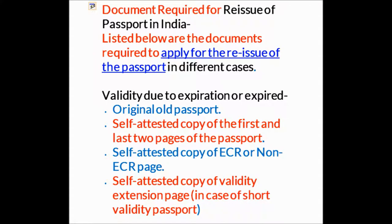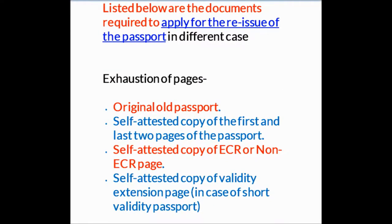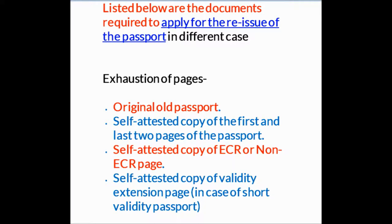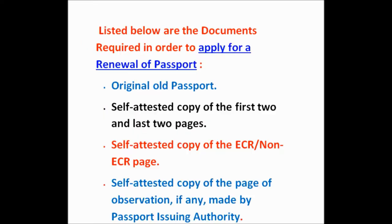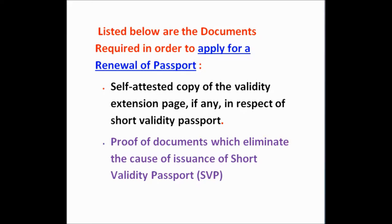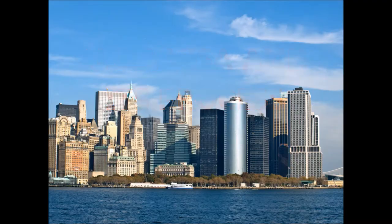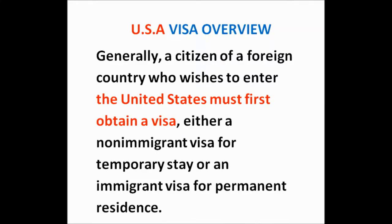Key points to remember: first, minor applicants can present an address proof document in the name of their parents. Second, if the applicant is submitting only a ration card, election card, or Aadhaar card as address proof, it must be supported with another address proof. Third, if the applicant is born after 26/01/1989, a birth certificate is mandatory. Fourth, Annexure H must be submitted if the applicant is a minor. Fifth, Annexure B and M must be submitted if the applicant is a government employee.